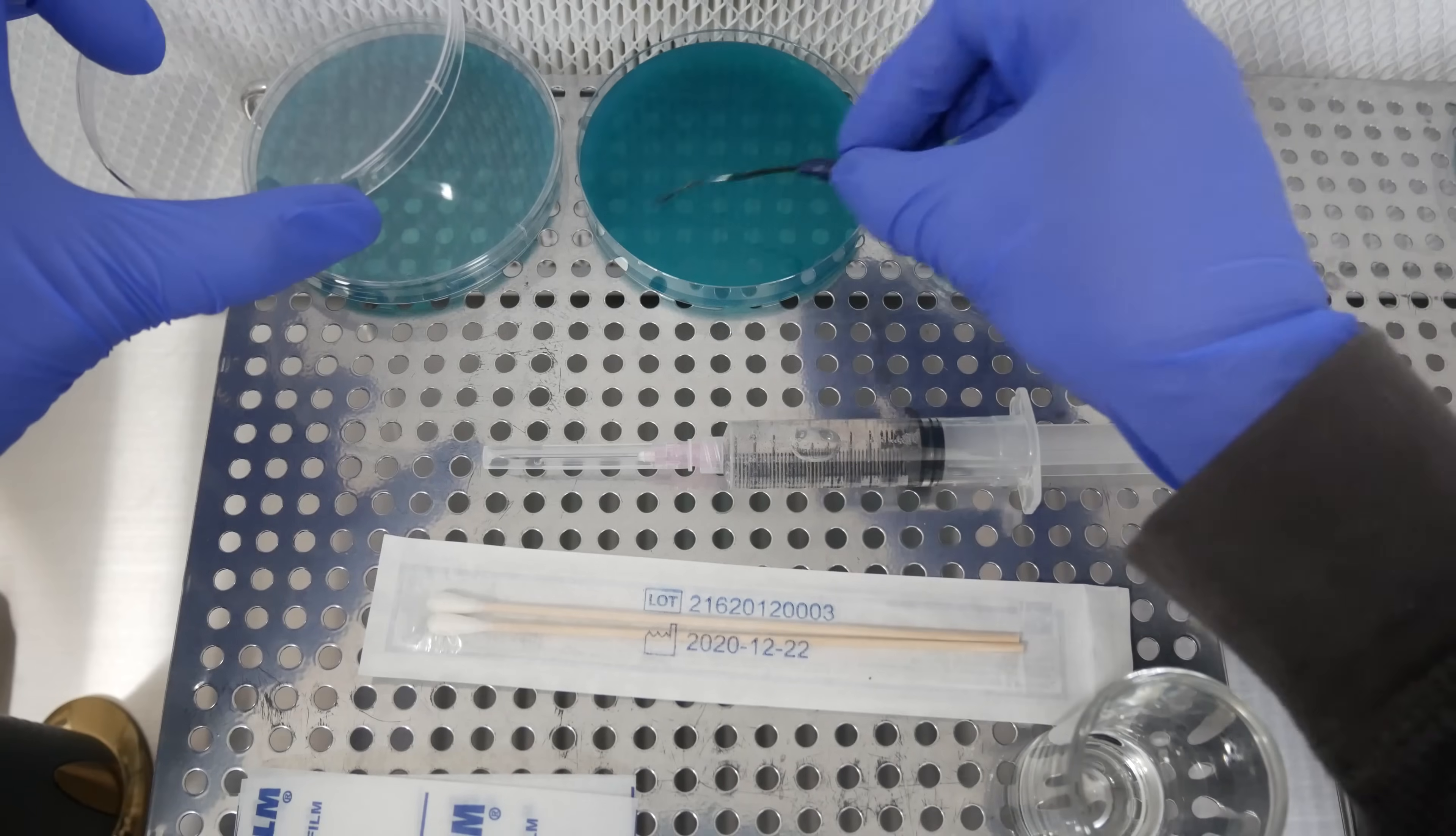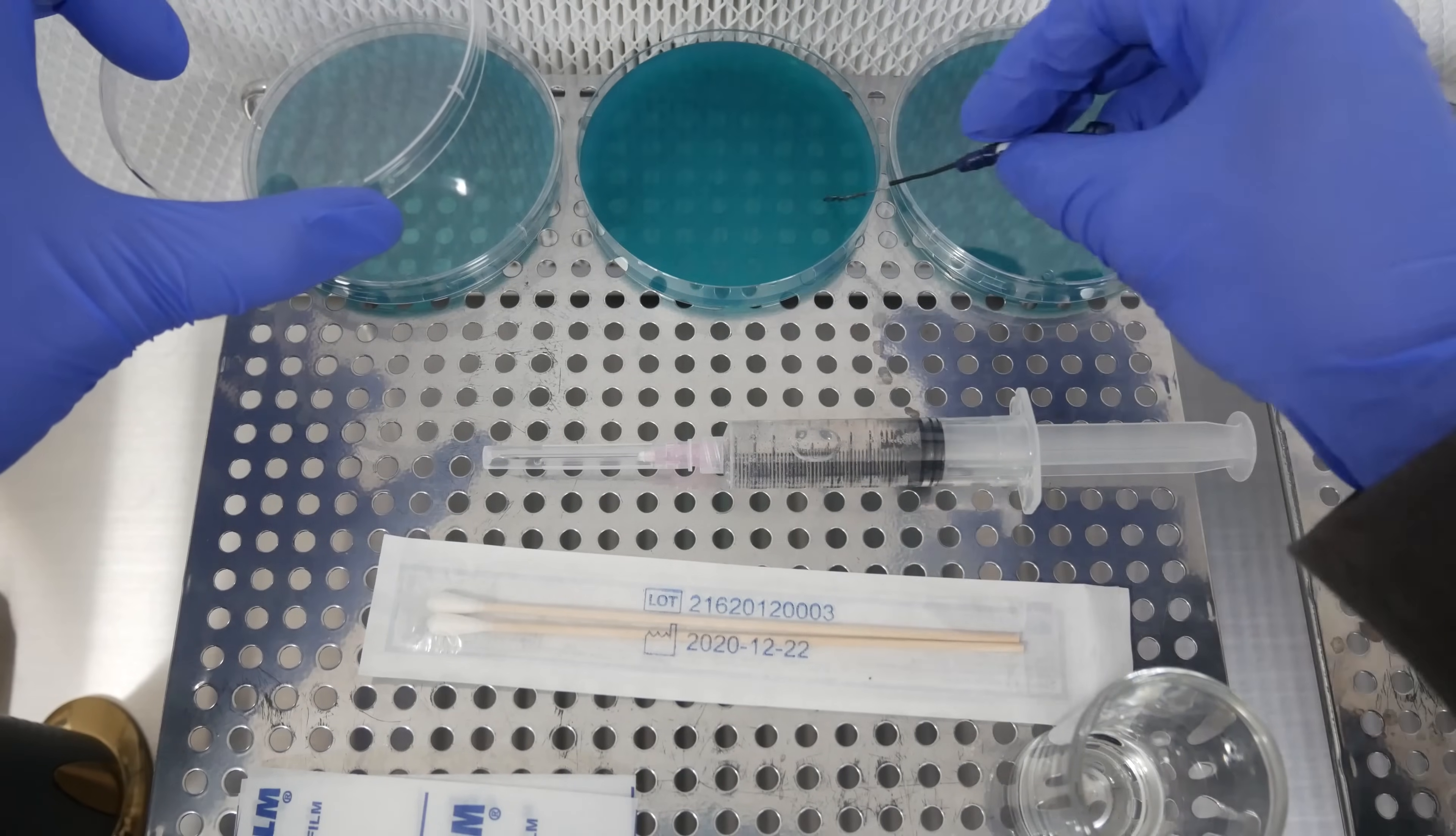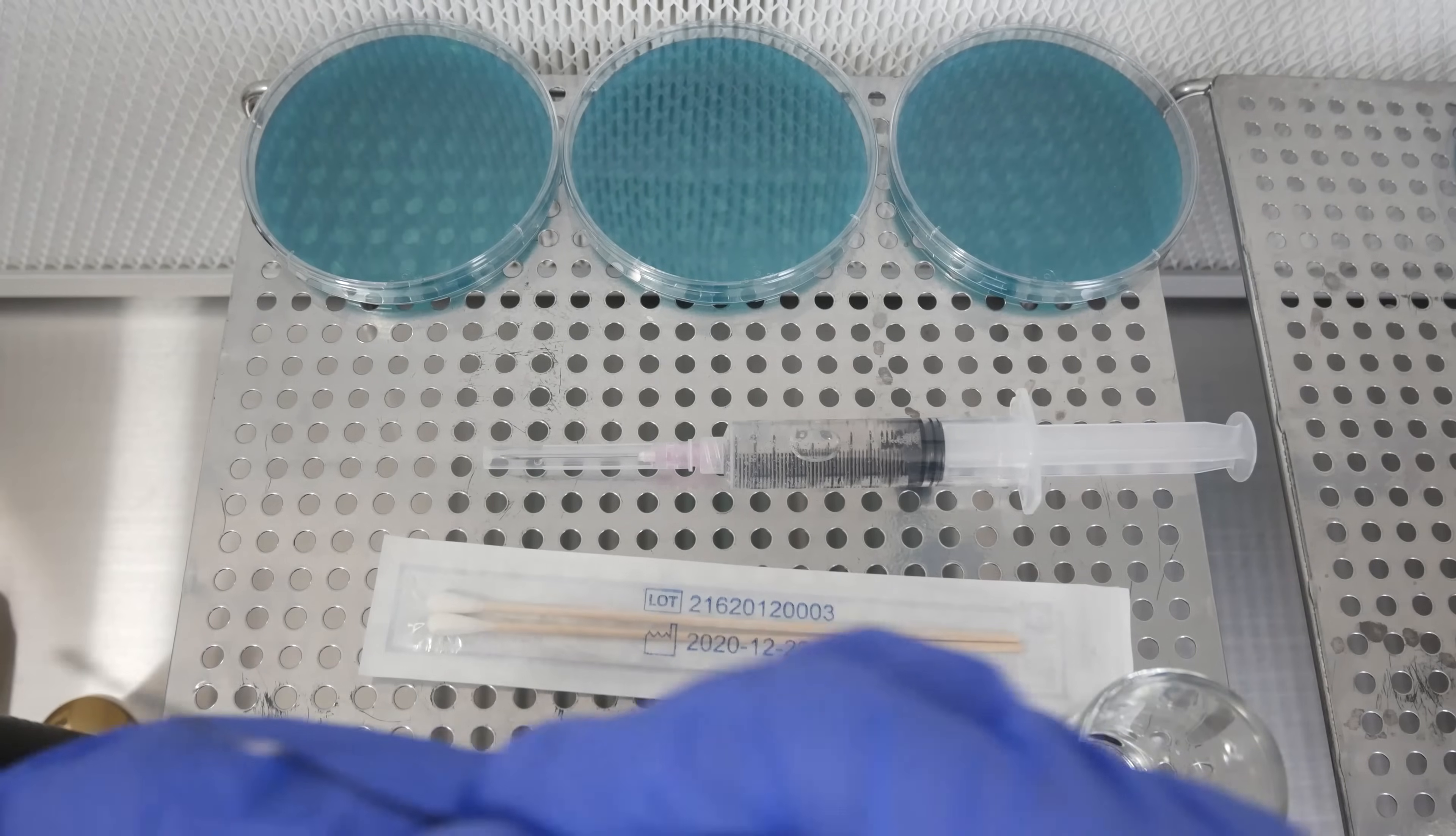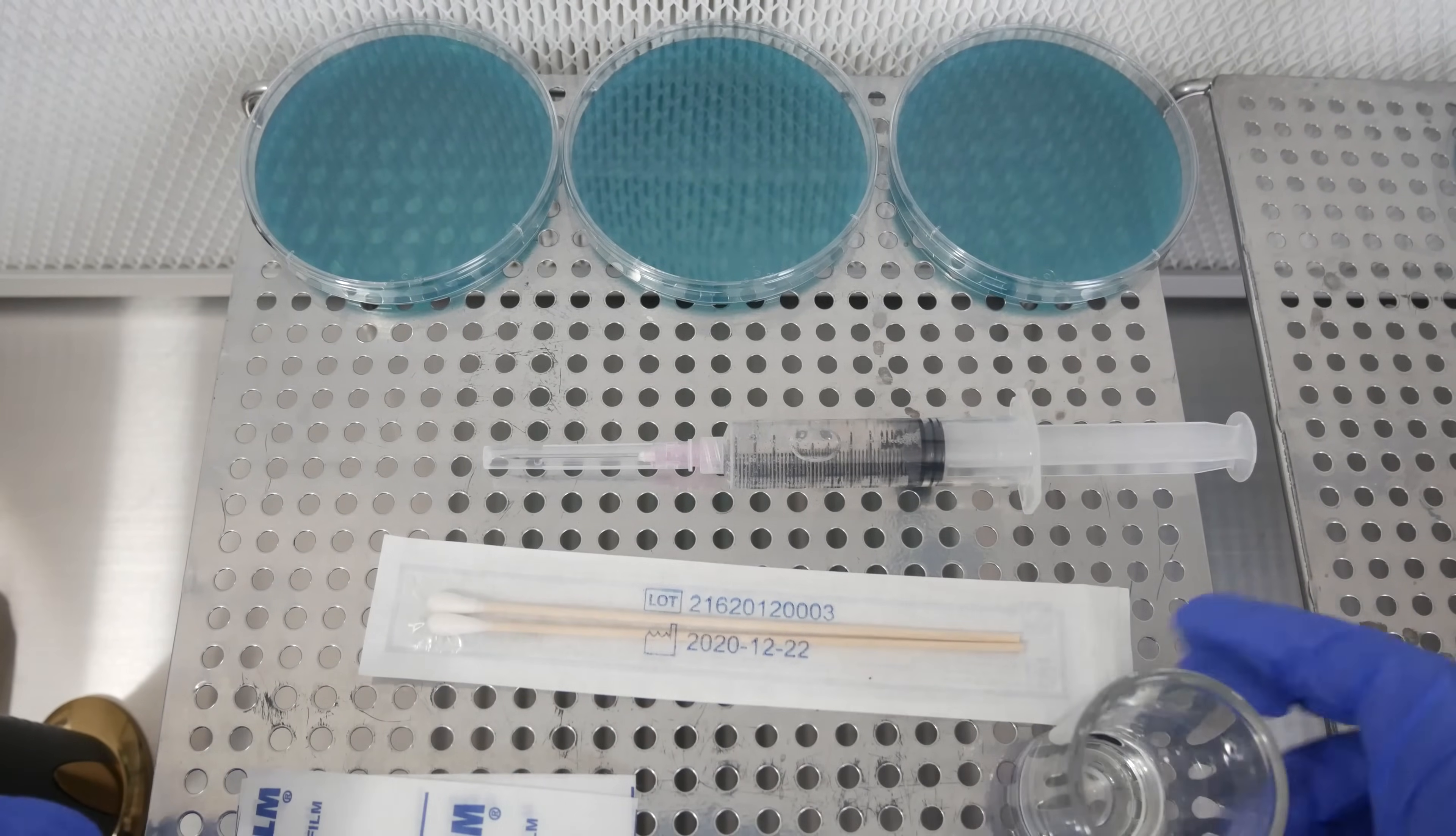I like to kind of do a zigzag motion, kind of like streak it across the plate. The more surface area you can touch on the agar with the loop, the better off you'll be at getting the spores to land on the agar.